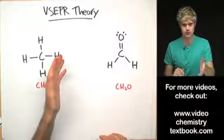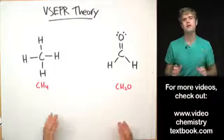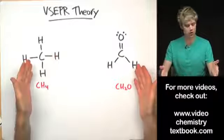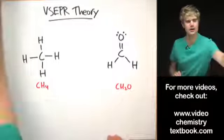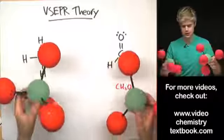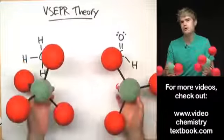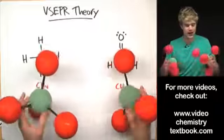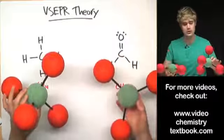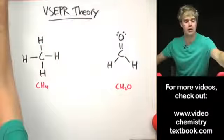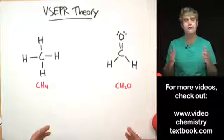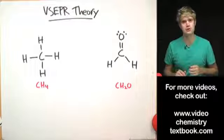This video is an introduction to VSEPR theory. VSEPR theory is a set of rules that we can use to look at a two-dimensional Lewis structure of a molecule and figure out what the molecule would look like in three dimensions. Because molecules are actual things in real life, they have three-dimensional structures that are often more complex than we can draw in two dimensions. So let's take a look at some Lewis structures and figure out what the 3D shapes of those molecules would be.